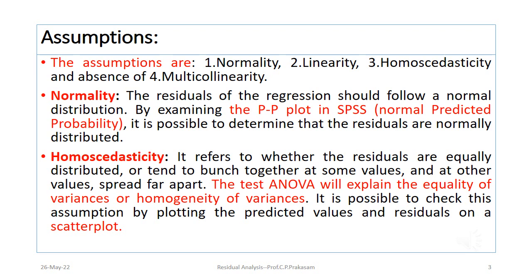Homoscedasticity refers to whether the residuals are equally distributed, or tend to bunch together at some values and spread apart at other values. We can test homoscedasticity using analysis of variance, which will explain the equality of variance. It is possible to check this assumption by plotting the predicted values and residuals on a scatter plot.